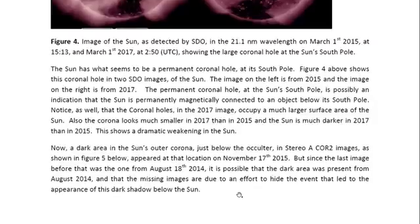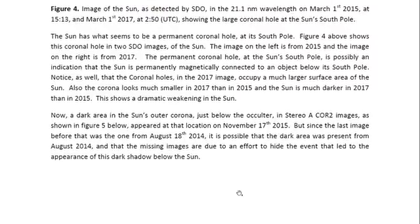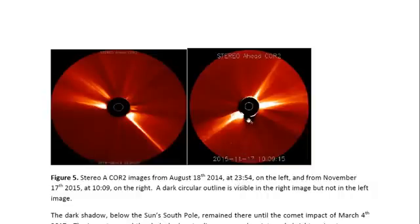Now, as it turns out, there is something in the Stereo A Core 2 images that also suggests that there is an object at the Sun's south pole. And this is what appeared on the Stereo A Core 2 images on November 17th, 2015, and is a dark shadow below the Sun. So this is a coronagraph image, so it has what we call an occulter that blocks out the Sun's brightest part, so that we can view the Sun's outer corona. The size of the Sun is actually the size of the white circle.